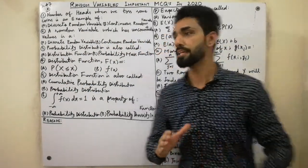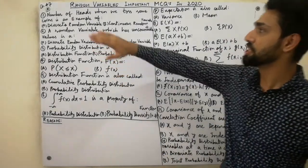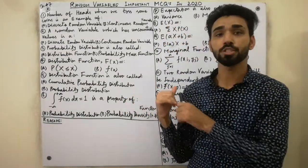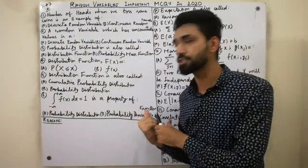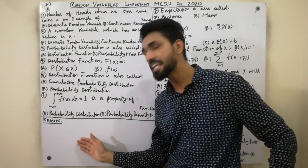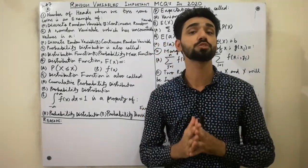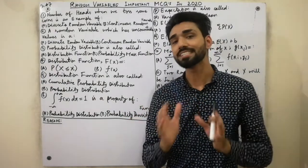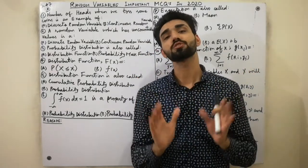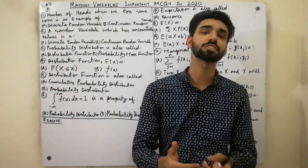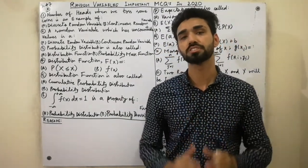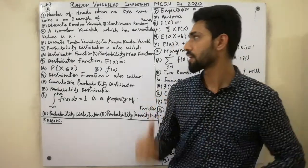Assalamu alaikum dear friends. Today I'm here to explain Chapter 7: Random Variables — important MCQs from 2020. These MCQs are very important for you. I will tell the reasons and solutions for why the MCQs are correct. If you want more content, visit the description below or the playlist. Watch all MCQs completely till the end to get the full concept.